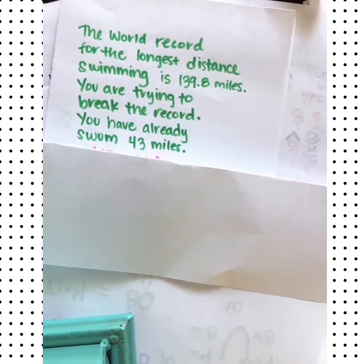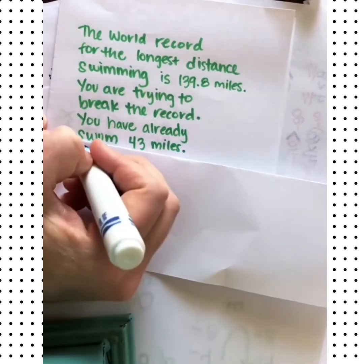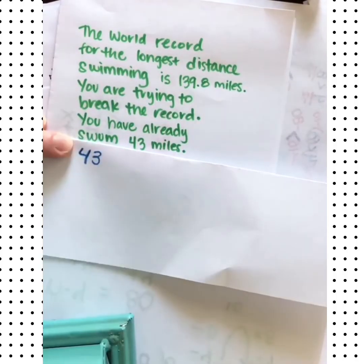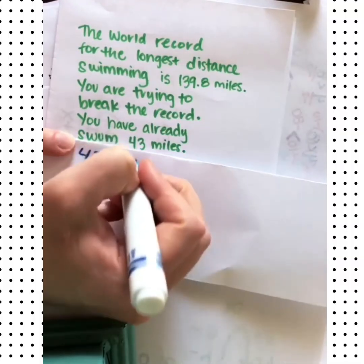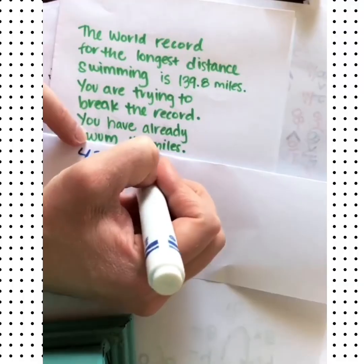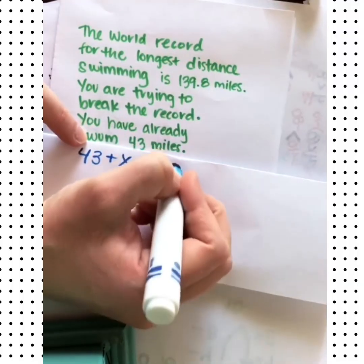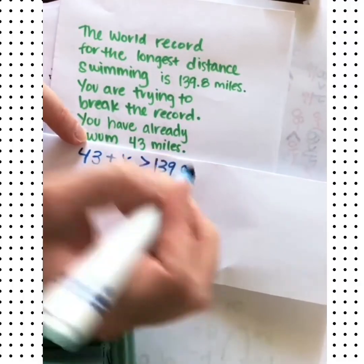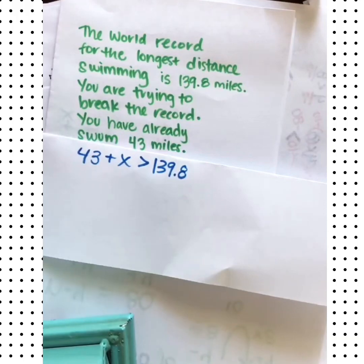Let's write an inequality that would show the distance you could still swim and break the record. So you already swum 43 miles. And you want this to break the record, so we want it to be greater than 139.8. We don't want to use an equal to there because we don't want to tie the record. We want to break it.